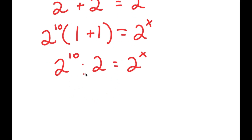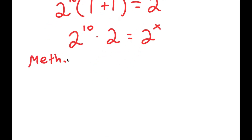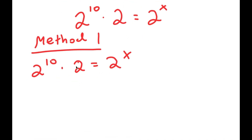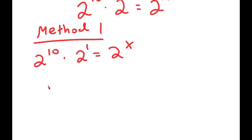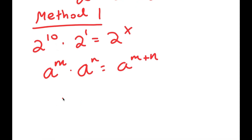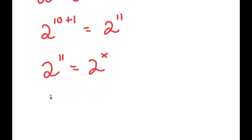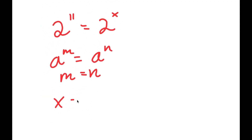For method 1, I have 2 to the power of 10 times 2 is equal to 2 to the power of x. I'm going to rewrite 2 as 2 to the power of 1. Now, if I have a to the power of m times a to the power of n, this equals a to the power of m plus n. So 2 to the power of 10 times 2 to the power of 1 equals 2 to the power of 11. So I get 2 to the power of 11 equals 2 to the power of x, which means x is equal to 11.